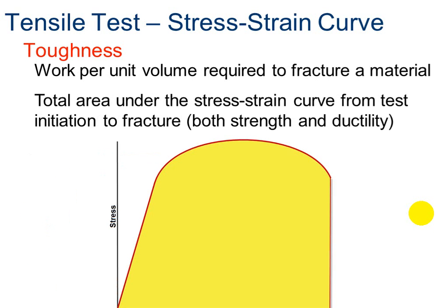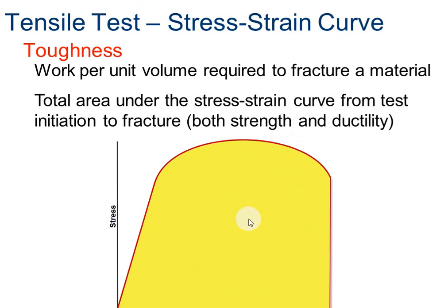How tough a material is depends on the work per unit of volume required to fracture the material. It's the total area under the stress-strain curve from test initiation to fracture — not just the triangular area, but the total area. Put a star at the end of the curve and label it fracture. We're not going to calculate this area because it's an odd shape that requires calculus.